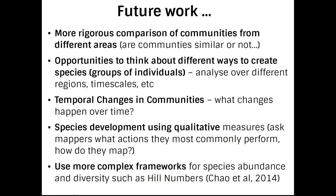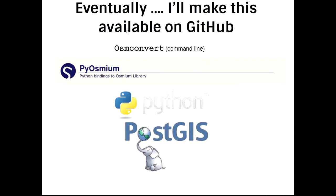Future work: I want to do more rigorous comparison of communities from different areas — I've just picked three at the moment. I want to think about different ways to create the groups, analyse over different regions and time scales, and look at species development using a qualitative approach — asking people how they map and reflecting that in the groups created. If I were mathematically brave enough, I'd look at hill numbers, a more complex framework for species abundance. Eventually this is going on GitHub — a very simple workflow: OSM Convert takes the Geofabrik data files, Pyosmium processes them, and then this goes into PostGIS.